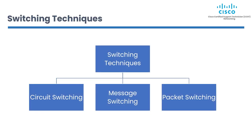Switching involves the movement of data packets between different network segments. There are several types of switching techniques. The first one is circuit switching — these networks use dedicated communication channels to transmit data, and it's commonly used in telephone networks where a dedicated circuit is established between two parties for the duration of the call. Next is packet switching — these networks divide data into packets and transmit them over the network, and it's used in modern data networks like the internet. Third is message switching — these networks transmit data as a complete message, used in older communication systems like telex networks.